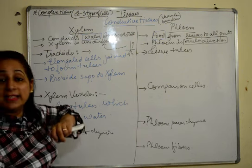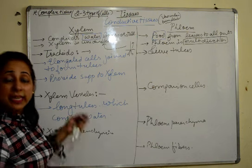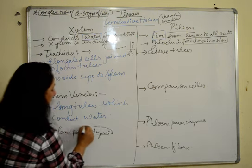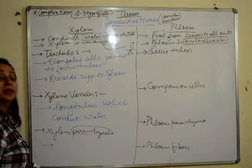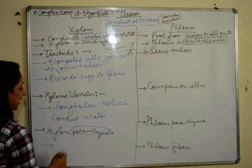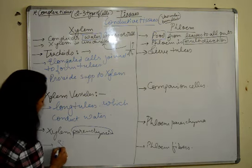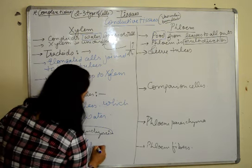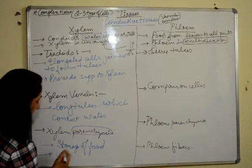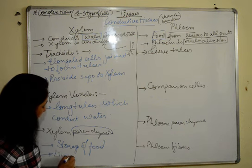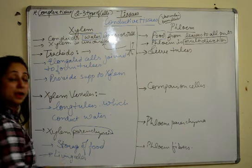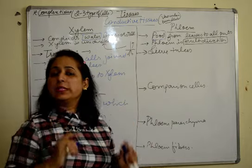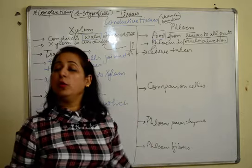This parenchyma — xylem parenchyma — leads to storage of food, and it is made up of living cells. Moving to the phloem: sieve tubes, companion cells, phloem parenchyma, and phloem fibers.